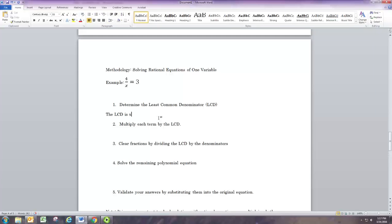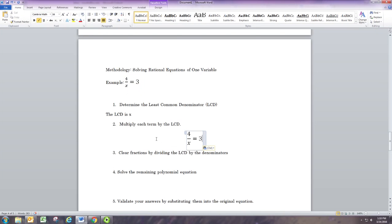Then you're going to want to multiply each term in the equation by the least common denominator. This includes fractions as well as whole numbers or polynomials. So we're going to multiply each term by x, so it'll be 3 times x and x times 4 over x. Because we multiply each term by the same number, the equation is still balanced. So we do introduce a possible issue, and that's why we'll have to do step 5.